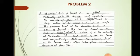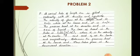Now the second problem. A conical tube of length 2 meter is fixed vertically with its smaller end upwards. The velocity of flow at the smaller end is 5 meter per second while at the lower end it is 2 meter per second. The pressure head at the smaller end is 2.5 meter of liquid. The loss of head in the tube is given by the equation 0.35 into (V1 squared minus V2 squared) by 2G, where V1 is the velocity at the smaller end and V2 is the lower end velocity. Determine the pressure head at the lower end. Flow takes place in the downward direction.